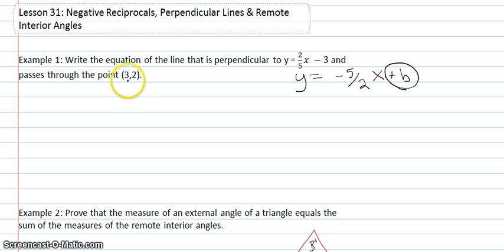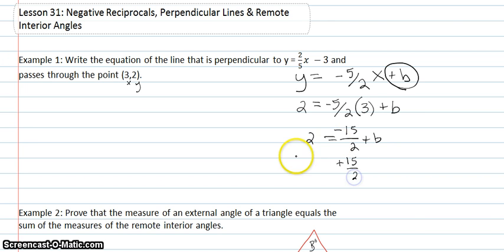What I'll do is put in 3 for x and 2 for y to find out what my y-intercept is. I'll have 2 equals negative 5 over 2 times 3 plus b. So, I'll have negative 15 over 2 plus b. And I'll add the 15 over 2 to both sides.